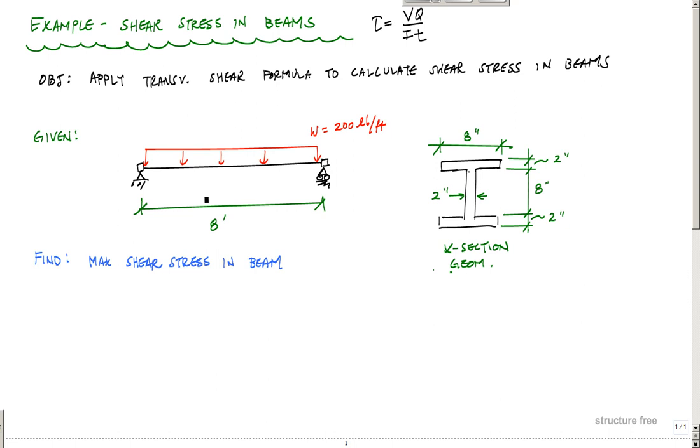I've got a simple structure here, a simply supported beam at ends A and B with a 200 pound per foot load and an eight foot long beam. Here's what my cross-section looks like. If I were to take a view or cut here, if I could actually look this way on the beam, I would see this cross-section view.